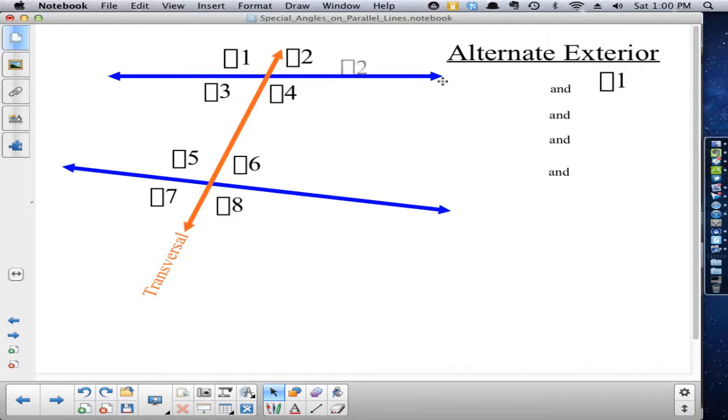Now, if I'm looking at alternate exterior angles, that would be angle one and angle eight. That's a pair of alternate exterior angles, and of course, two and seven.